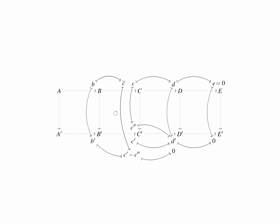And using the commutativity of the centre-left square, we can track this element B the other way around the square. Let's say it maps to C bar in C, then it maps down to C' minus C'' in C'. Now we have two elements of the group C, C bar and C. The first mapping to C' minus C'' and the second mapping to C''. If we add these two elements together, they'll map to the sum C' minus C'' plus C'', which is equal to C'. And so we've found an element, namely C bar plus C, which hits the target C' as we wanted. And that completes the proof of the second part of the five lemma.